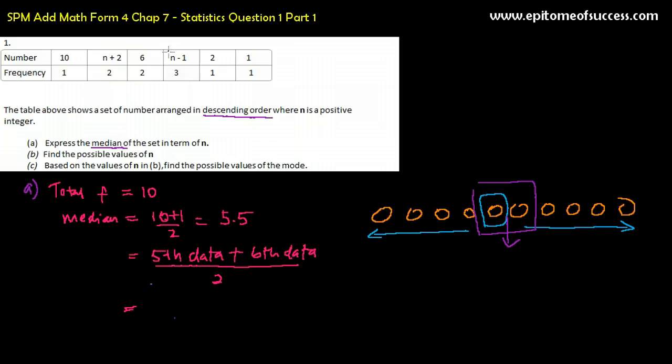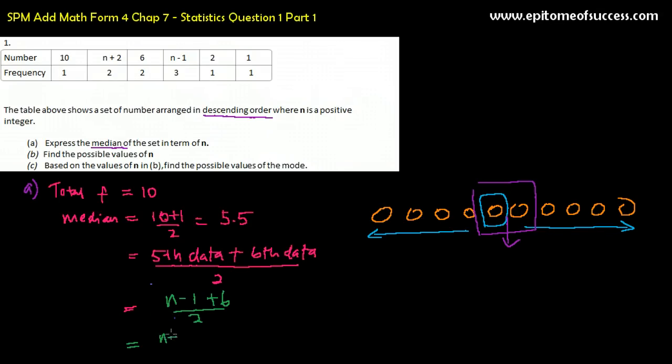So the fifth data is n minus 1 right here, right? And the sixth data is the data after it. The sixth and the seventh data is number 6, actually. So the fifth data, let's write it over here, is n minus 1. And plus the sixth data is 6. So divided by 2. And that would be n plus 5 over 2. And that's it. This is your answer. Because it says express the median of the set in terms of n. So your answer should have n in it. Okay, that's it.